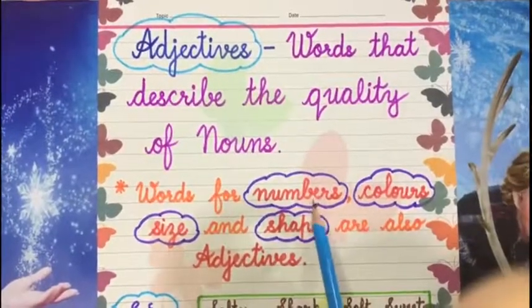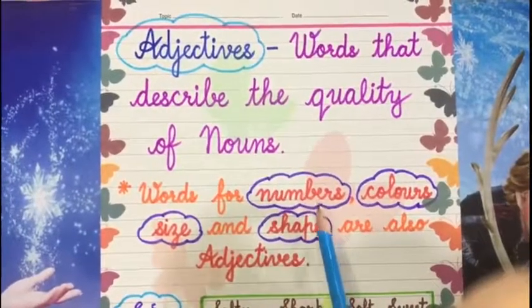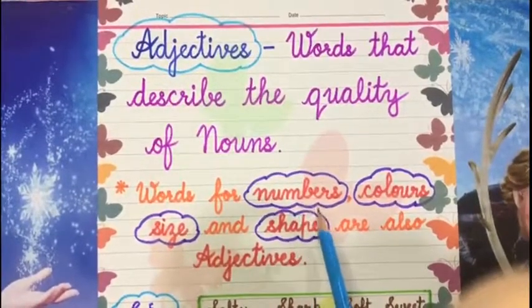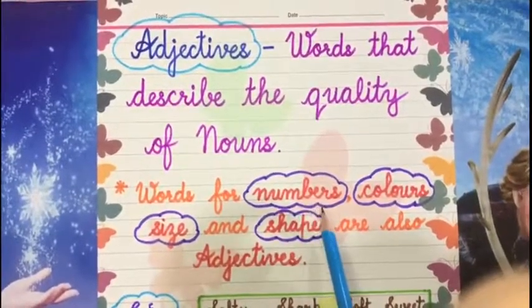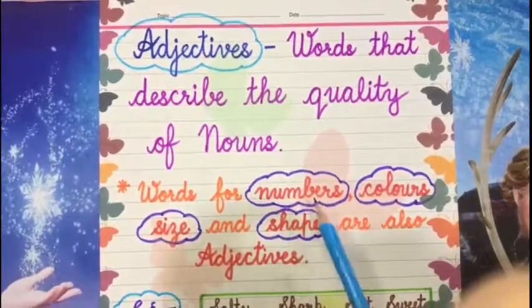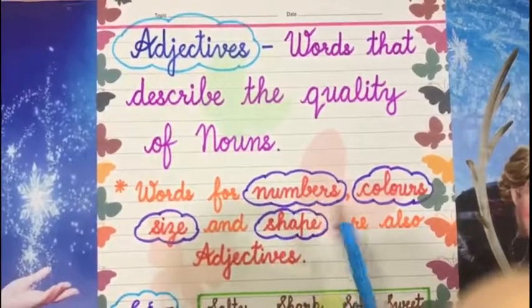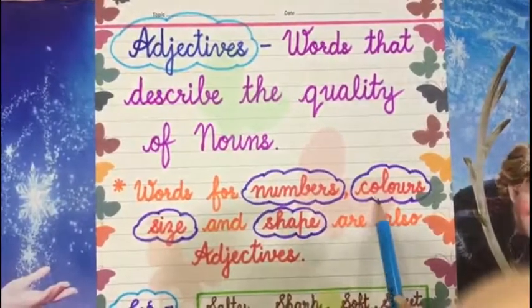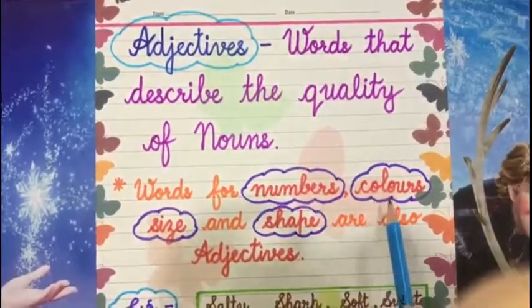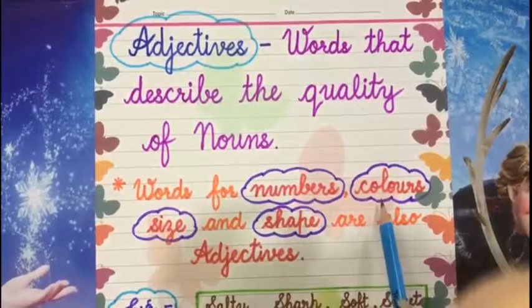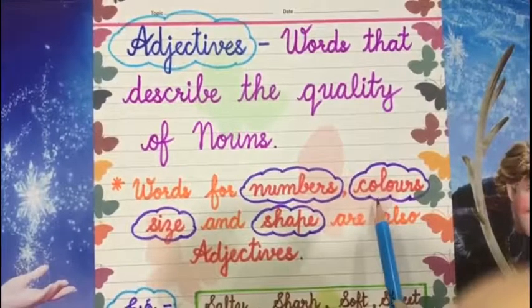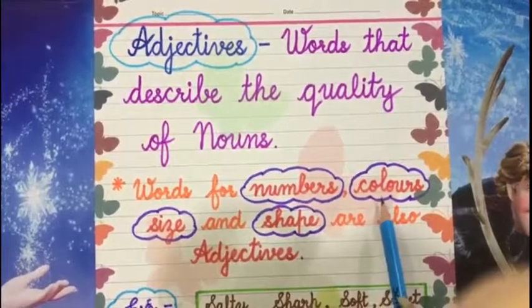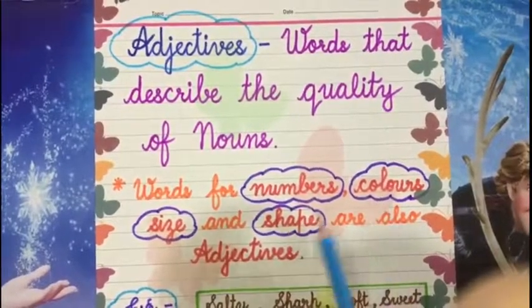For example, five pencils. Pencil is a thing, it is a noun. So five is going to be the adjective. Adjective of color: green parrot. Parrot is an animal, so green is going to be the adjective.